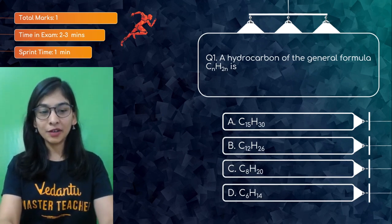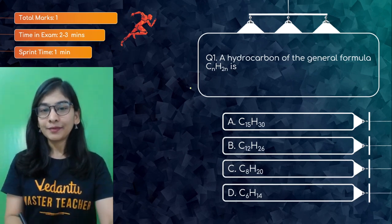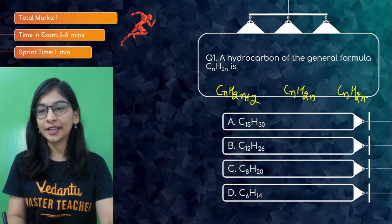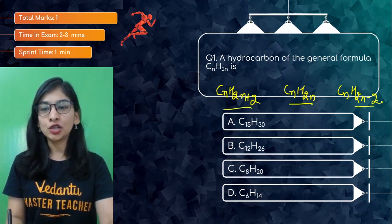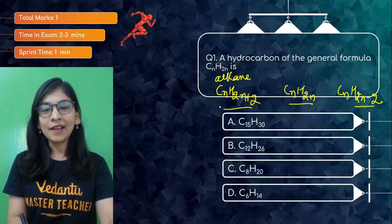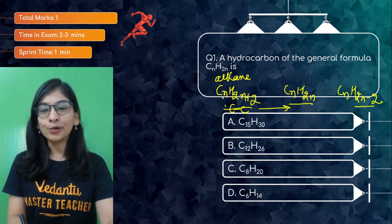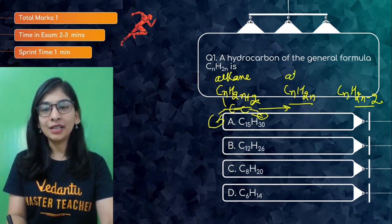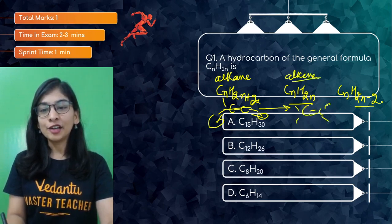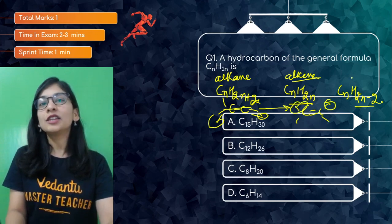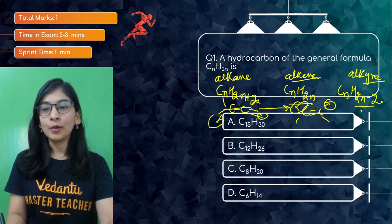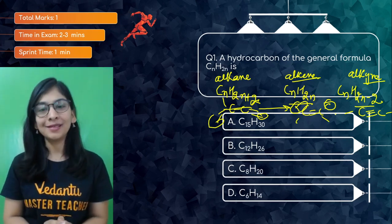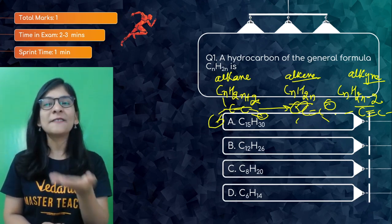Today we're discussing hydrocarbons. The three formulas you need to know are: CnH2n+2 for alkanes (carbon-carbon single bond), CnH2n for alkenes (carbon-carbon double bond), and CnH2n-2 for alkynes (carbon-carbon triple bond). The difference between each is two hydrogen atoms. Removing two hydrogens from an alkane gives a double bond — that's an alkene. Removing two more gives a triple bond — that's an alkyne.